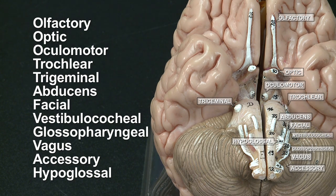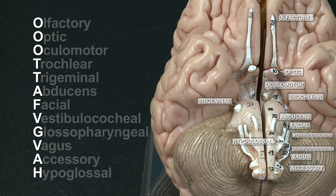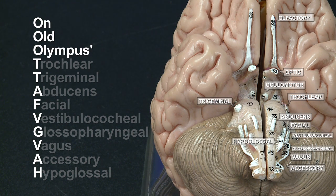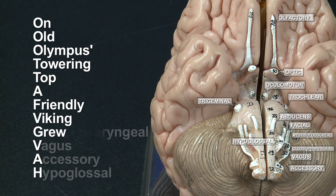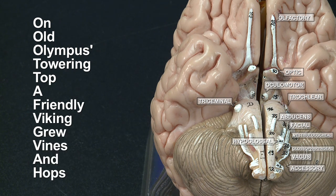To remember the names of the cranial nerves, we can use a mnemonic: On old Olympus towering top, a friendly Viking grew vines and hops.